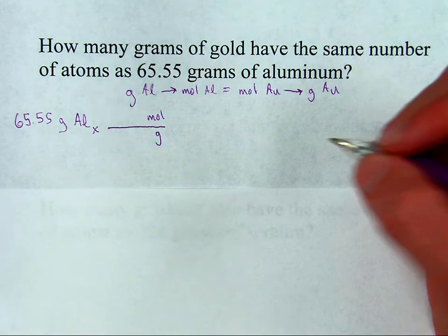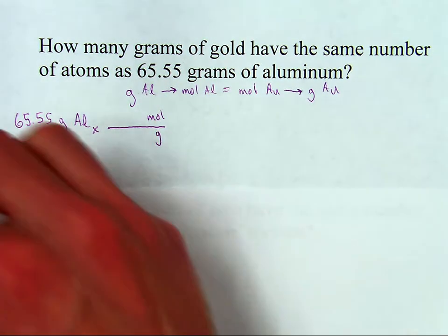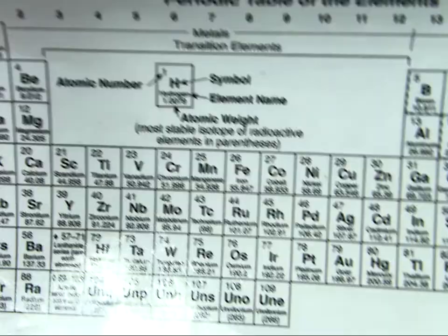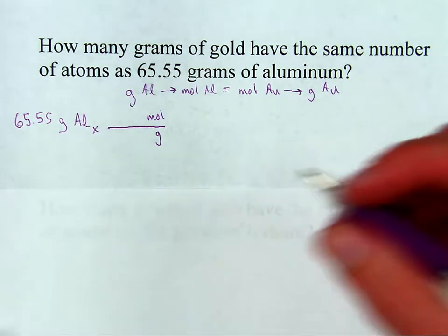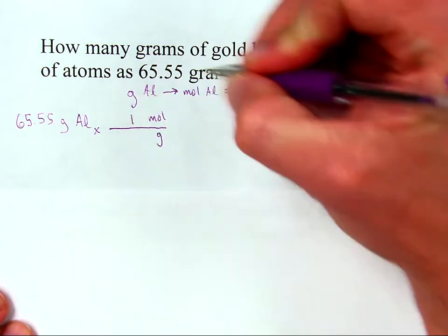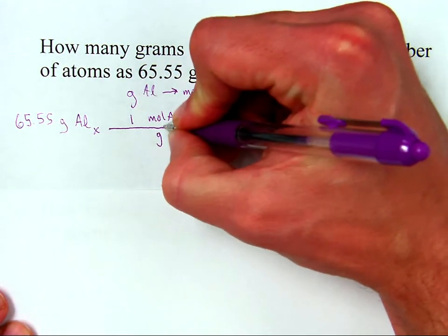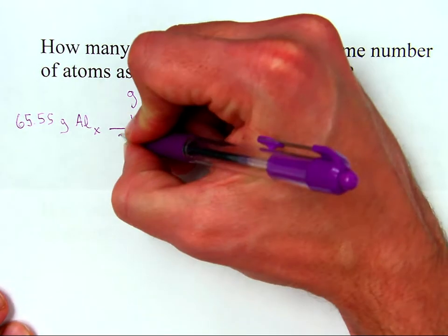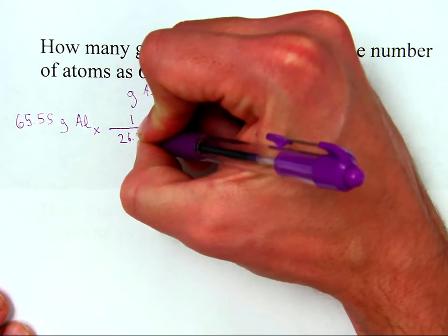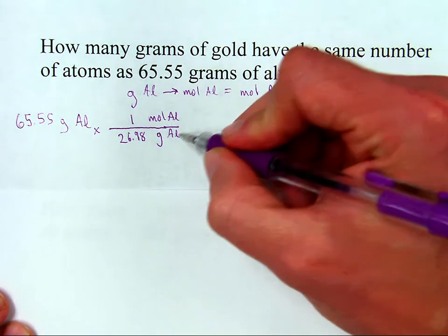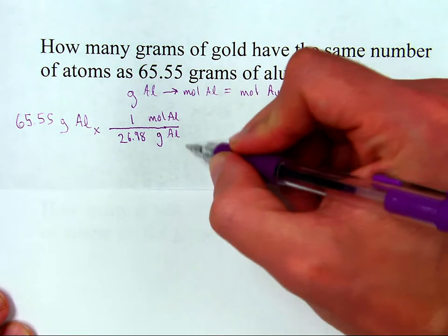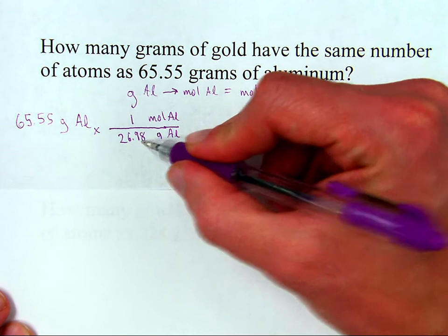And then the way molar mass works is on the periodic table, which you're seeing here, this is the mass of one mole. So according to the periodic table, one mole of aluminum has a mass of 26.98 grams of aluminum. Okay, and make sure to specify what element I'm talking about because obviously if this is a different element, put a different number here.